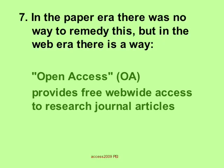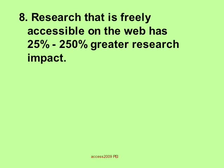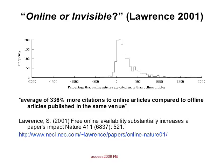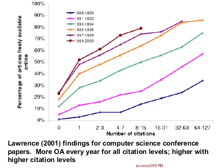Open access provides free, web-wide access to research journal articles. Research that is freely accessible on the web has 25% to 250% greater research impact. In 2001, Lawrence found that for computer science articles, those that were available for free online were cited over three times as often as those that were not. Lawrence also found that the size of the open access citation advantage was greatest as you got into the higher citation ranges — meaning more citable articles benefit more from being open access — and that's consistent with the fact that the top 10% of articles tend to receive about 90% of citations.